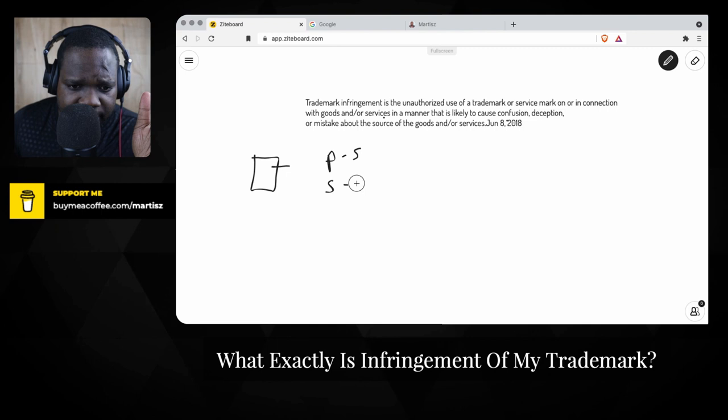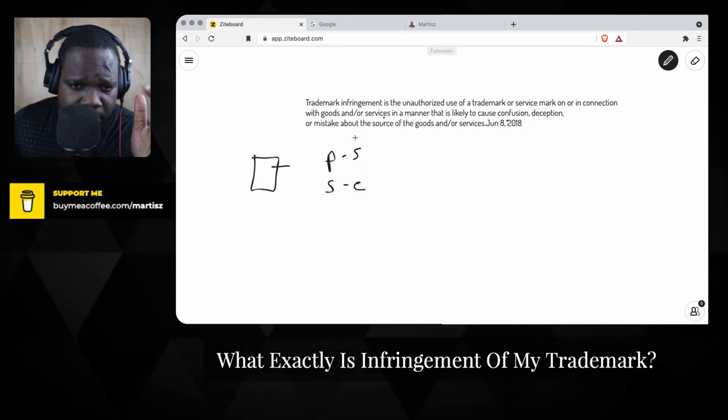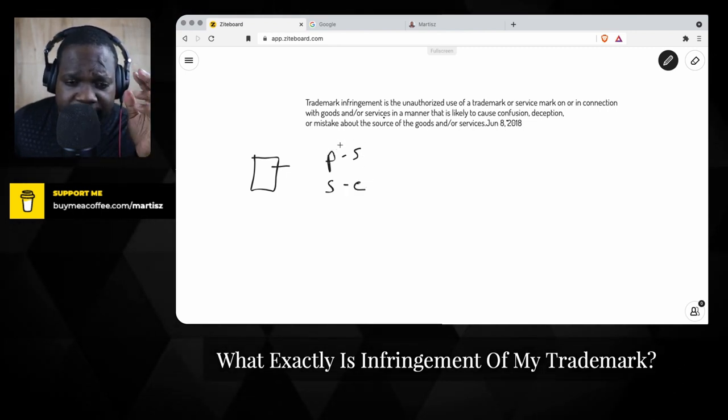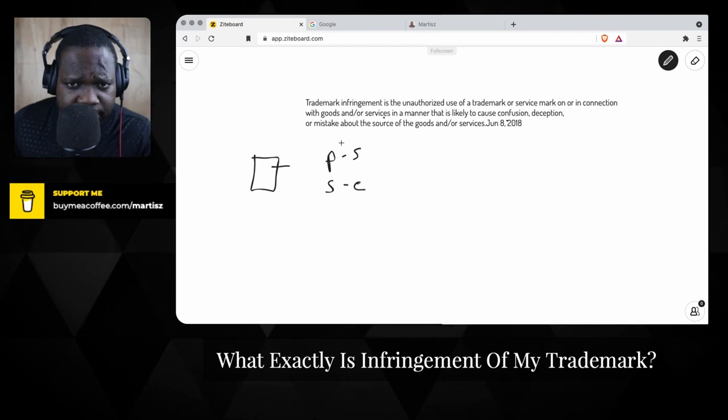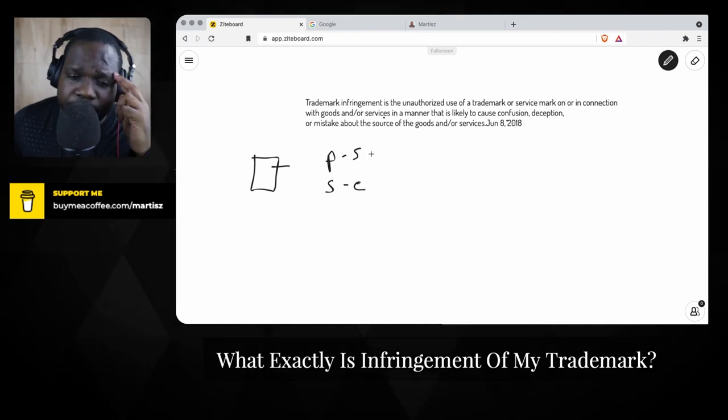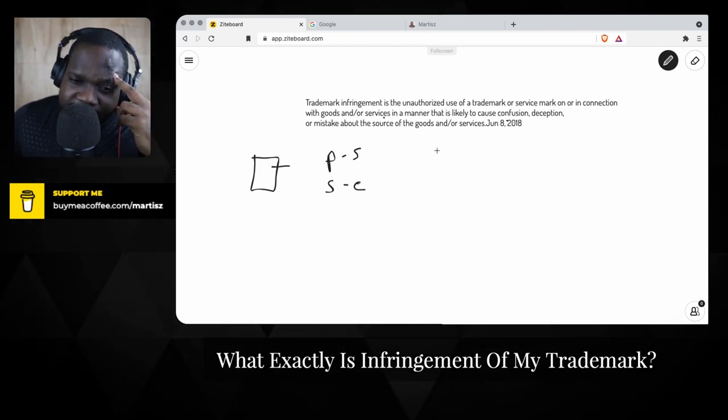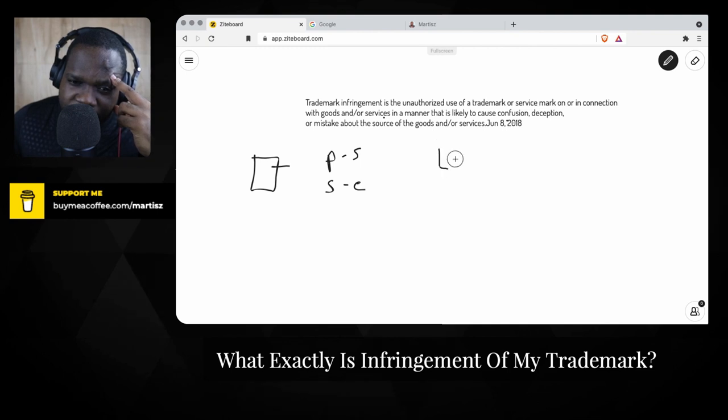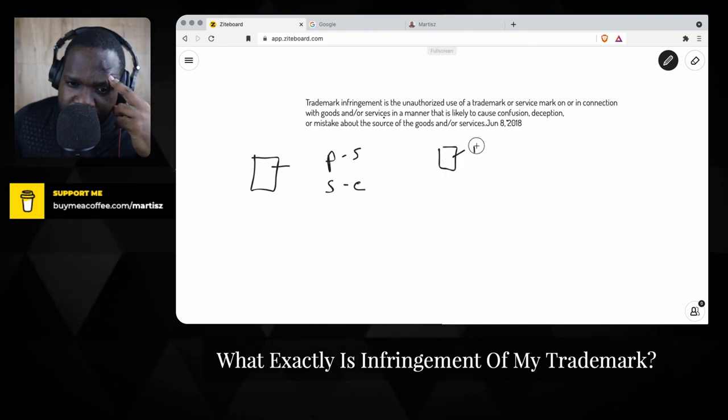Events is a service, shoes is a product, and you have different classes for those kinds of things. You register it for trademark, and let's say someone else also registered a trademark for the product shoes.